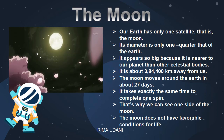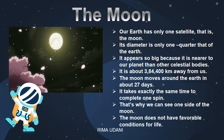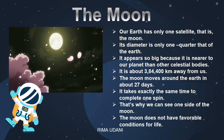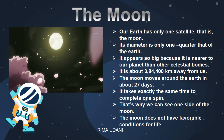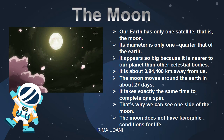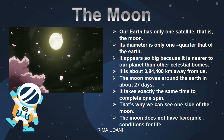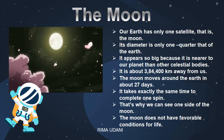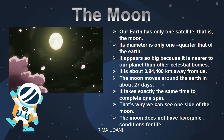The Moon — our Earth has only one satellite, which is the Moon. Its diameter is only one quarter that of the Earth. It appears so big because it is nearer to our planet than other celestial bodies. It is about three lakh eighty-four thousand four hundred kilometers away from us. The Moon moves around the Earth in about 27 days and takes exactly the same time to complete one spin — that's why we can see only one side of the Moon. The Moon does not have favorable conditions for life; it does not have water or air. It has mountains, plains, and depressions called craters on its surface, which cast shadows on the Moon's surface.